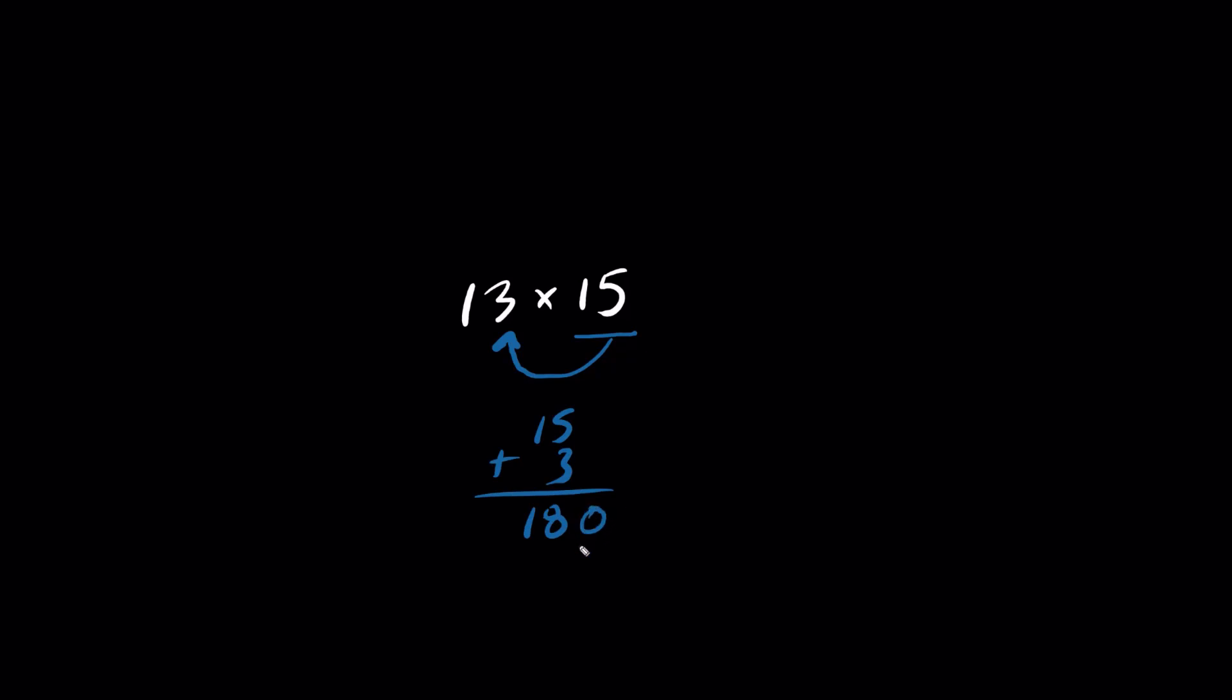But we add a 0. So the answer is 180 plus the last two digits multiplied. What's 3 times 5? It's 15. So we add it mentally in our heads. 180 plus 15 is 195.